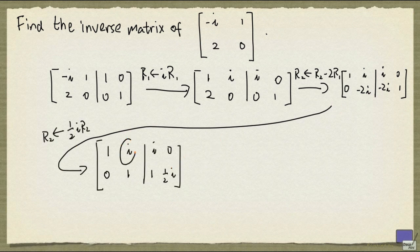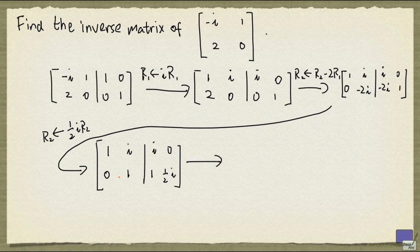Now I'm going to make that a 0 by adding minus i times row 2 to row 1.